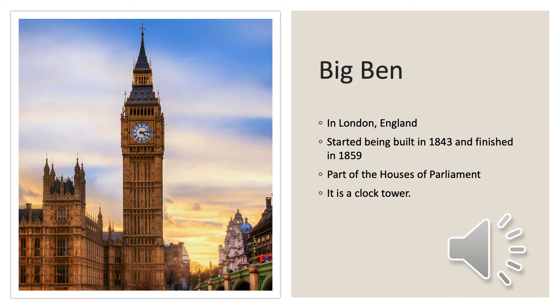This is a tower and clock tower called Big Ben, located in London, England. It started being built in 1843, but took a really long time to build, finishing in 1859. If you've seen photos recently, it's actually going through some reconstruction at the moment to maintain the structure. It is part of the Houses of Parliament, where our laws are made — so it's part of the government buildings and it is a clock tower. It is a really important landmark for the United Kingdom now, recognised all over the world, but that was not its original purpose.